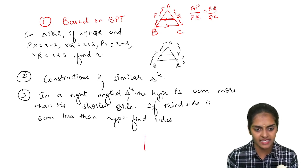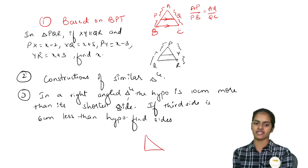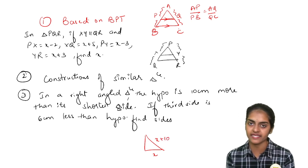So firstly, if you see a right angled triangle, they are saying hypotenuse is 10 centimeter more than the shortest side. So shortest side, if I take it as x, hypotenuse is 10 more than x.